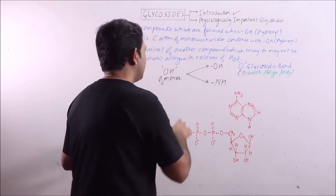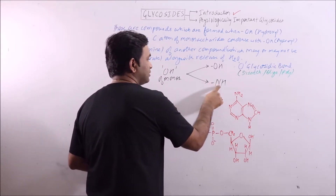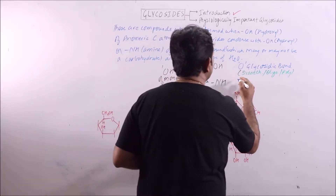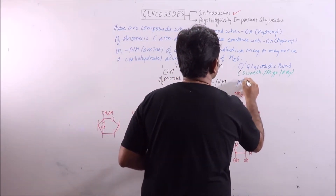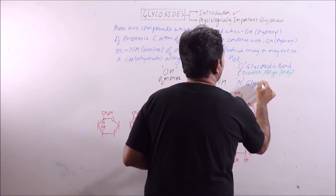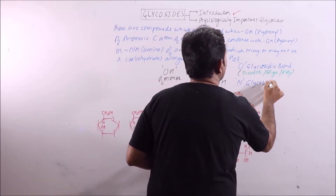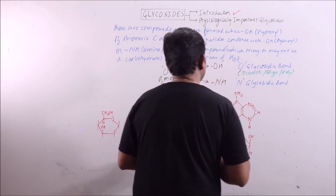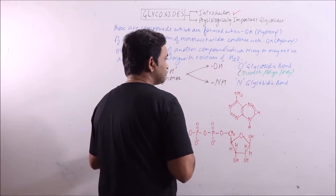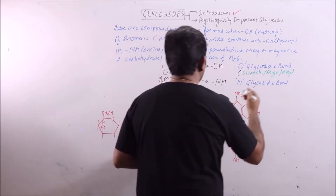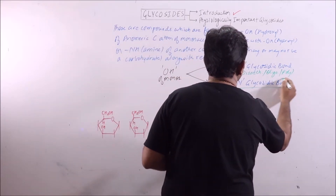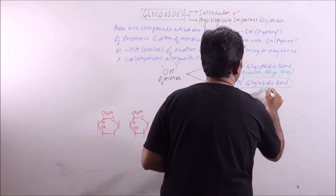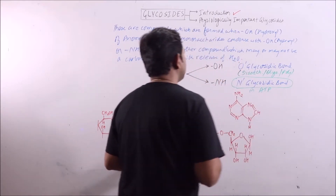And if the OH of monosaccharide condenses with an NH group, then it is an N-glycosidic bond. This is formed during formation of ATP.